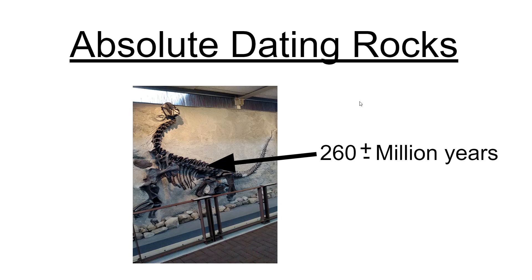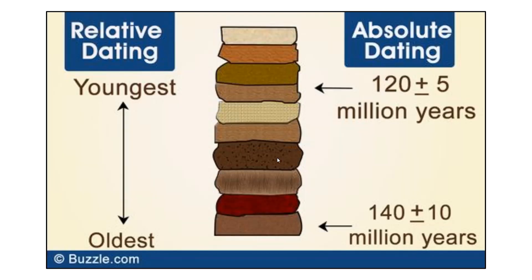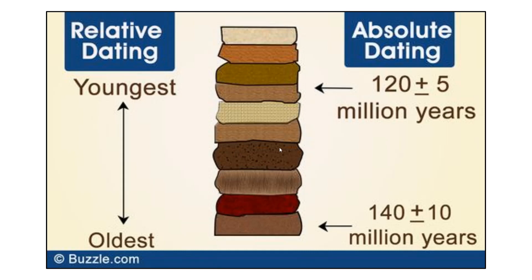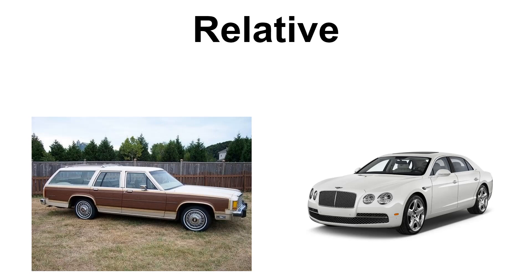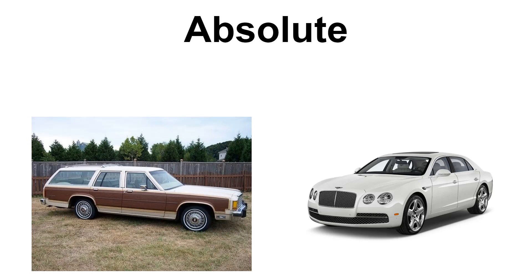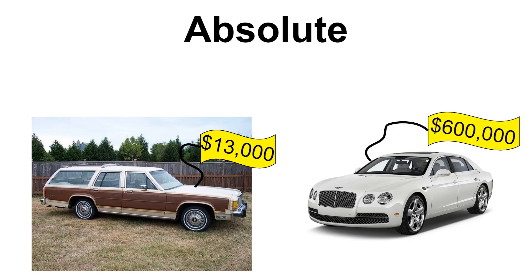Absolute dating — what does it mean? Relative dating, as you can see here, is going from youngest to oldest, or relatively dating one compared to the other. We did this a few weeks ago with cross-cutting relationships, figuring out which one's the youngest, which one's the oldest. Today we're doing absolute dating — putting a number on the rock. If you're relatively dating cars, you'd say the station wagon is less and the Bentley is more money. Absolute dating is when you put a number to it: this is selling for $13,000 and this one for $600,000.